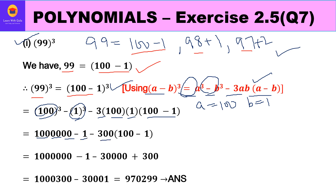Opening the bracket: 300 × 100 = 30,000 and 300 × (-1) = -300, but since we have minus 300 times minus 1, that becomes plus 300. So we get 1,000,000 - 1 - 30,000 + 300. Simplifying, the final answer for 99 cubed is 970,299.